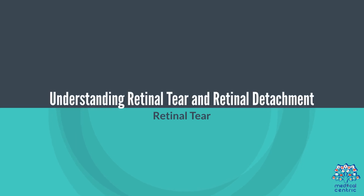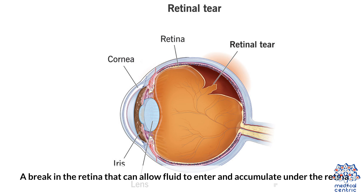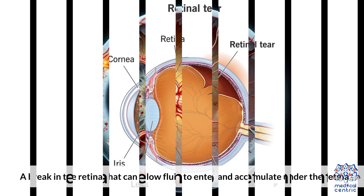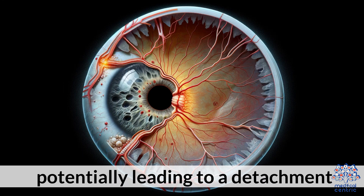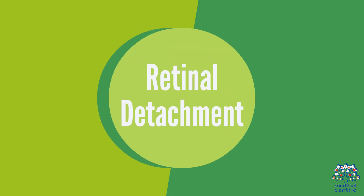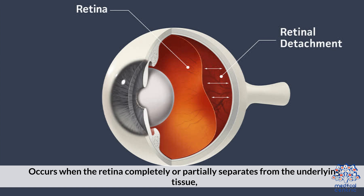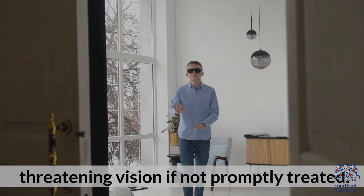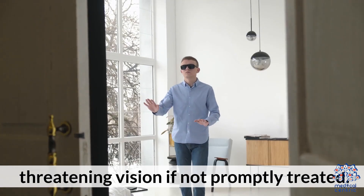Understanding Retinal Tear and Retinal Detachment. A retinal tear is a break in the retina that can allow fluid to enter and accumulate under the retina, potentially leading to a detachment. Retinal detachment occurs when the retina completely or partially separates from the underlying tissue, threatening vision if not promptly treated.